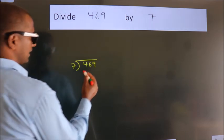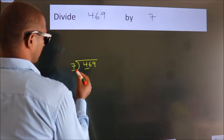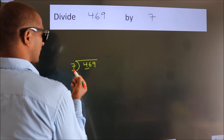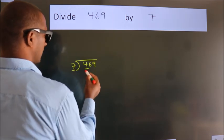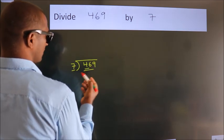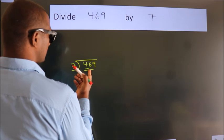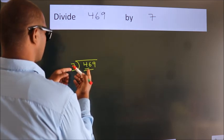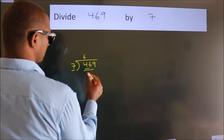Next. Here we have 4, here 7. 4 is smaller than 7, so we should take two numbers, 46. A number close to 46 in the 7 table is 7 times 6, which is 42.